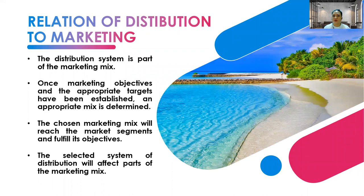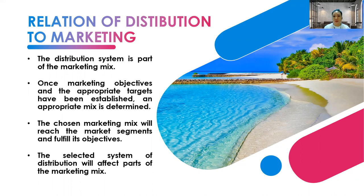Regarding the relation of distribution to marketing: the distribution system is part of the marketing mix. Once marketing objectives and appropriate targets are established, an appropriate marketing mix is determined to reach market segments and fulfill objectives. The selected distribution system will affect parts of the marketing mix — for example, if a product passes through many travel intermediaries, the price increases because intermediaries add service charges or commission fees.